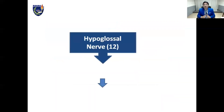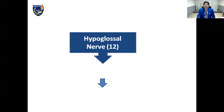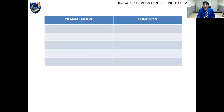The fifth and final cranial nerve highlighted is the hypoglosal nerve — cranial nerve 12. It is a motor nerve responsible for tongue movement.